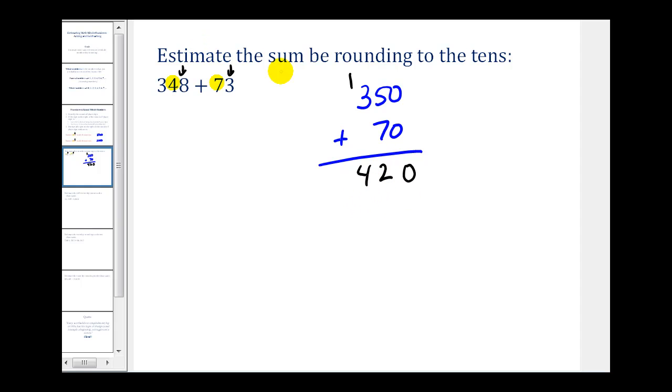This type of estimation is used quite a bit in the real world. For example, when you go to the grocery store and you buy a bunch of items, we often round to the nearest dollar or even $10 to determine what our approximate cost will be when we go to the checkout counter.